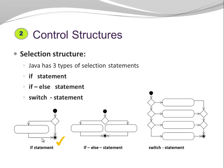The second control structure is the selection structure. Here we choose a certain path of execution based on a condition. Java has three types of selection statements: the if statement, the if-else statement, and the switch statement.